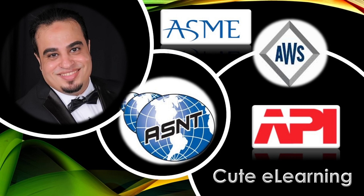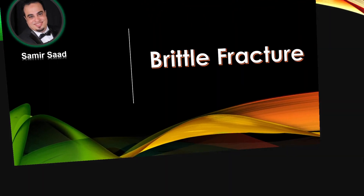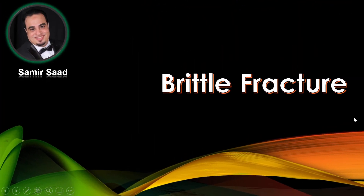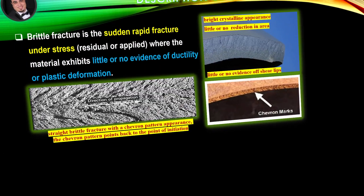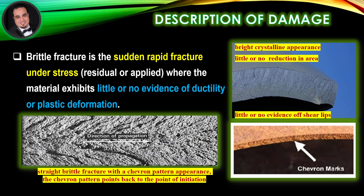Welcome to QtE Learning Channel. In this lecture, we will discuss Brittle Fracture. Brittle Fracture is the sudden rapid fracture, under stress — residual or applied — where the material exhibits little or no evidence of ductility or plastic deformation.